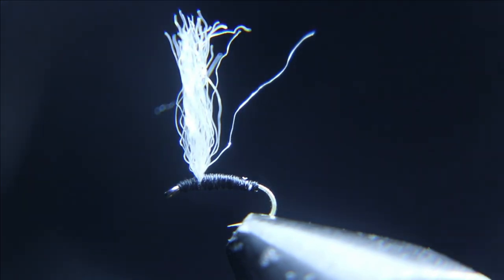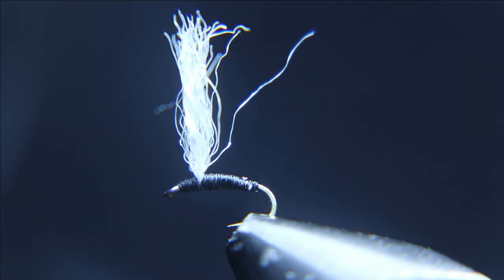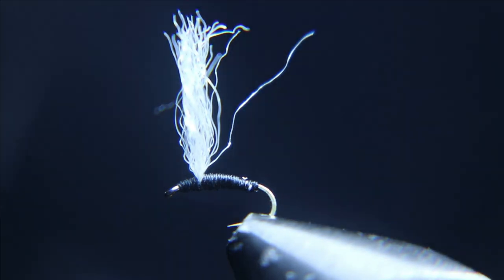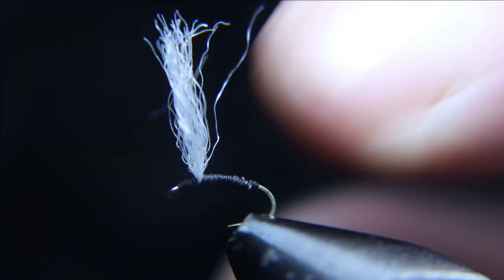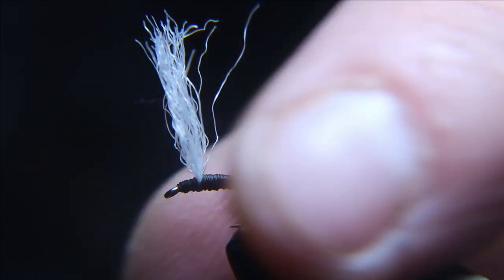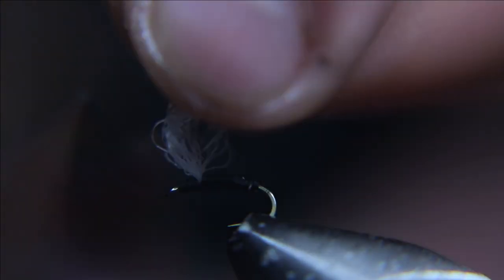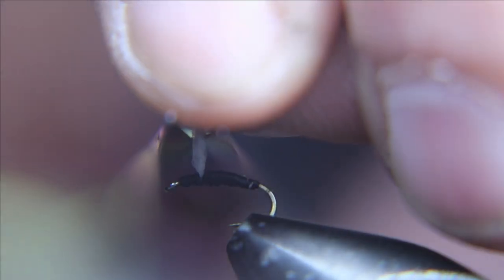I like to cut the wing half the distance of the hook shank, so half of the length of the hook shank. You can make it the whole length of the hook shank. Experiment what you like best. I see more balance in the fly if I cut it shorter because it don't have a tail or anything.